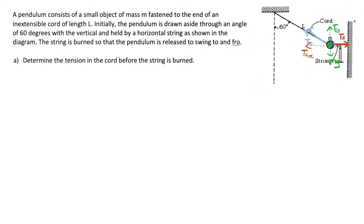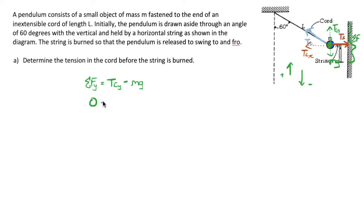I can use either axis to write an equation. Looking at the Y axis, the sum of all forces equals TCY minus Mg. The object is being held in equilibrium before the string is burned — it's not moving, certainly not accelerating. So the net force, which is MA by Newton's second law, equals zero. Therefore, zero equals TCY minus Mg, which means TCY equals Mg.